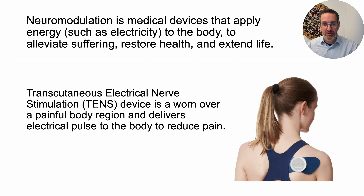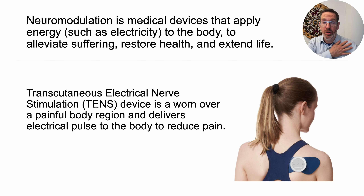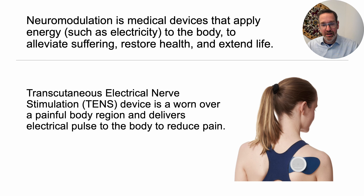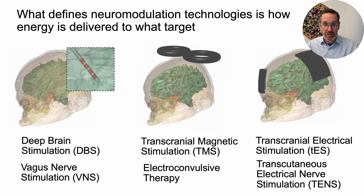One example of a neuromodulation device that you could get in your local pharmacy would be a TENS device. A TENS device is indicated for the treatment of pain. The instructions indicate that the device should be placed over the part of the body experiencing discomfort, the intensity is turned up until you feel tingling, and then through a gate control mechanism the pain is reduced. This is an example of electricity being used to treat chronic pain.